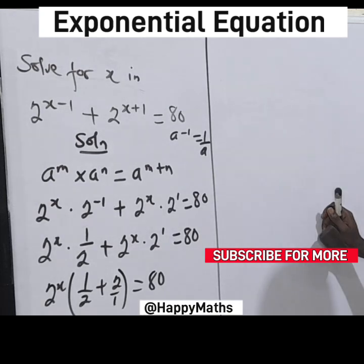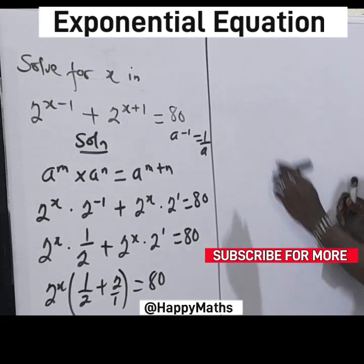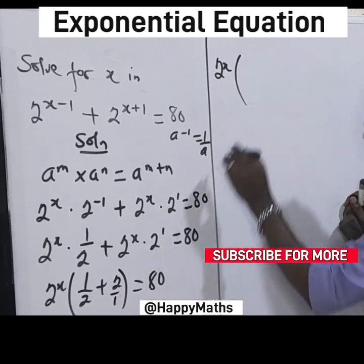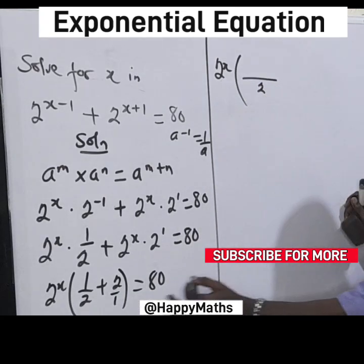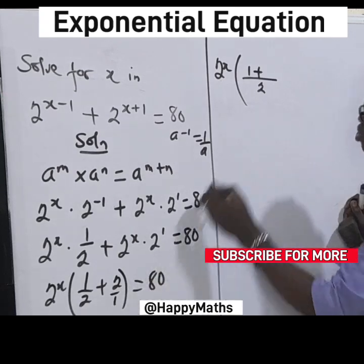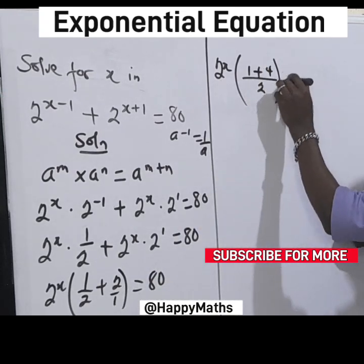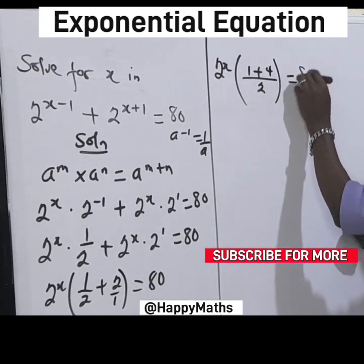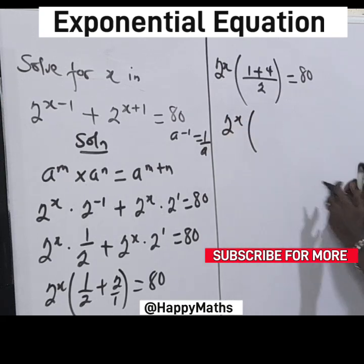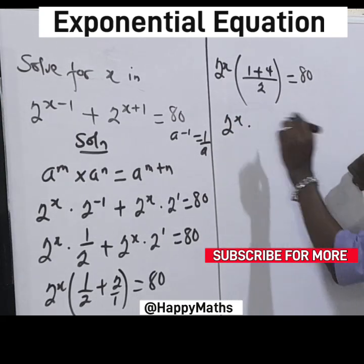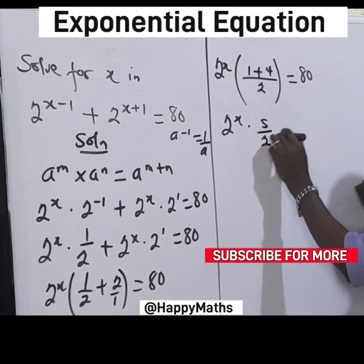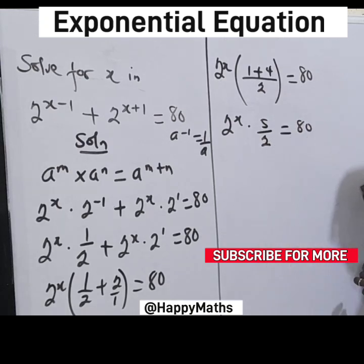This is 2 raised by s. Now the sum of 2 and 1 will give us 2. So we have 2 times 2 is 4, giving 2 raised by s times 1 plus 4, which is 5 over 2, equal to 80.